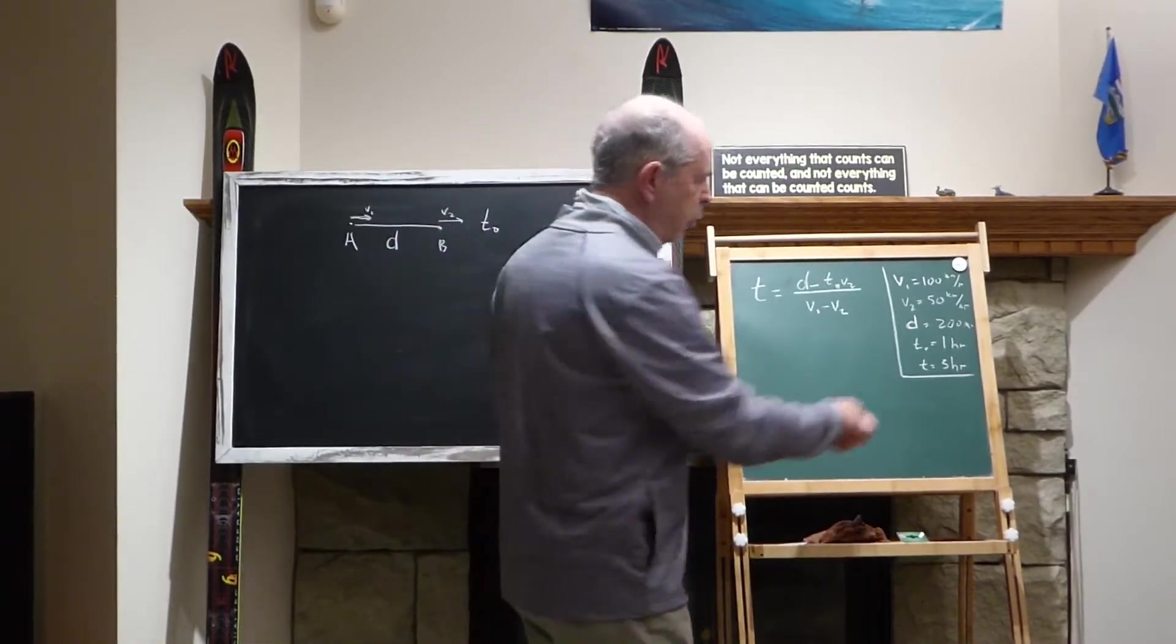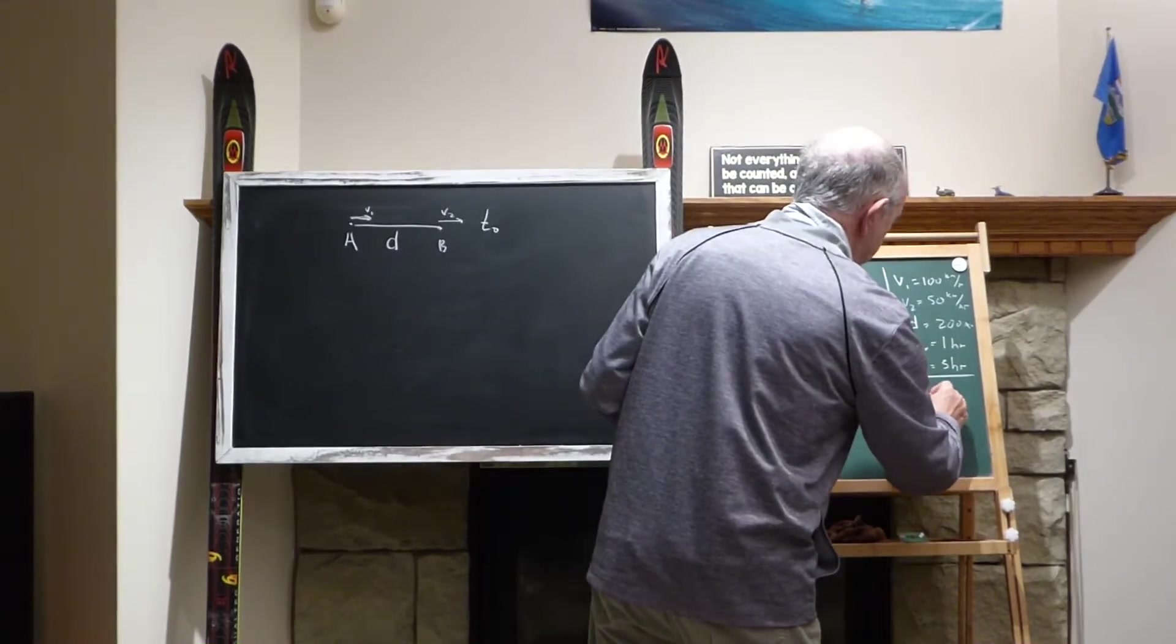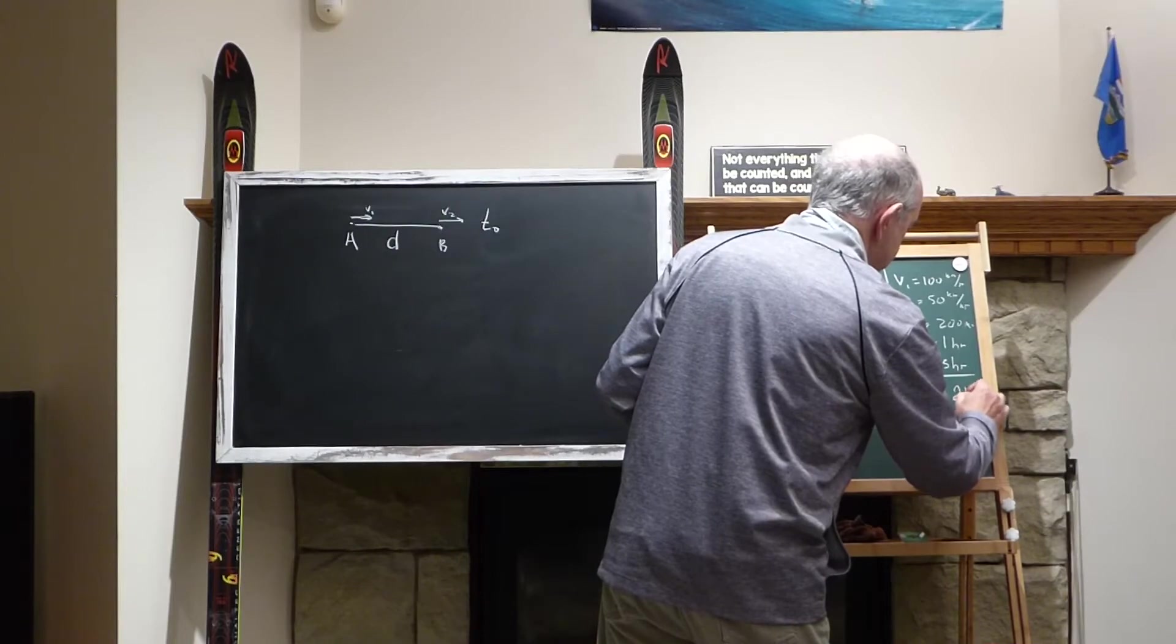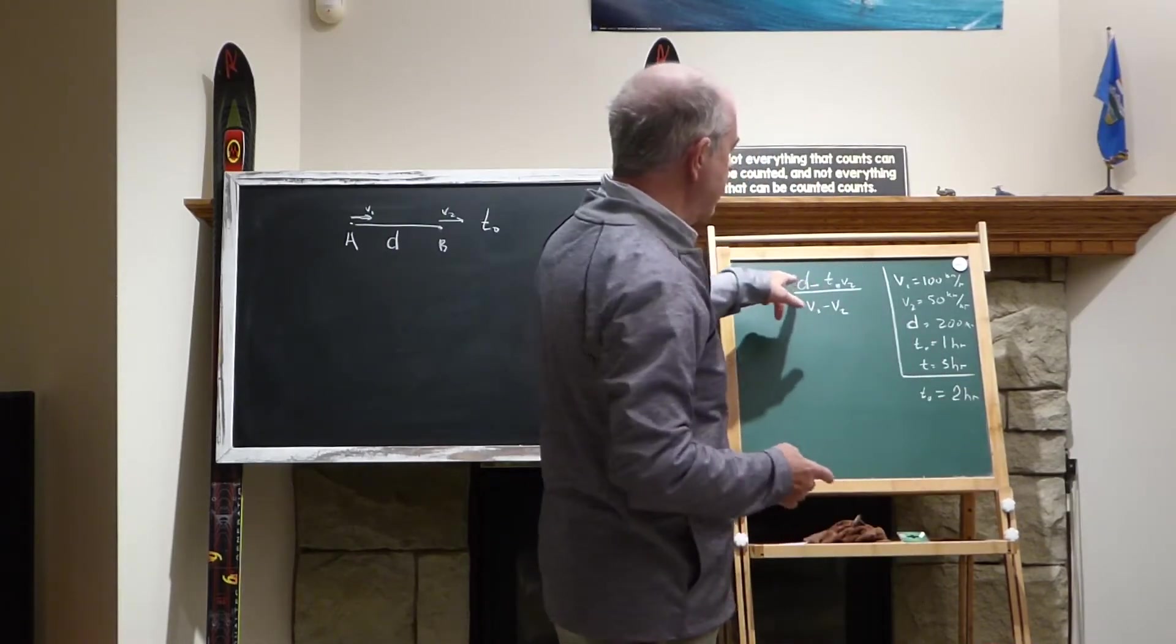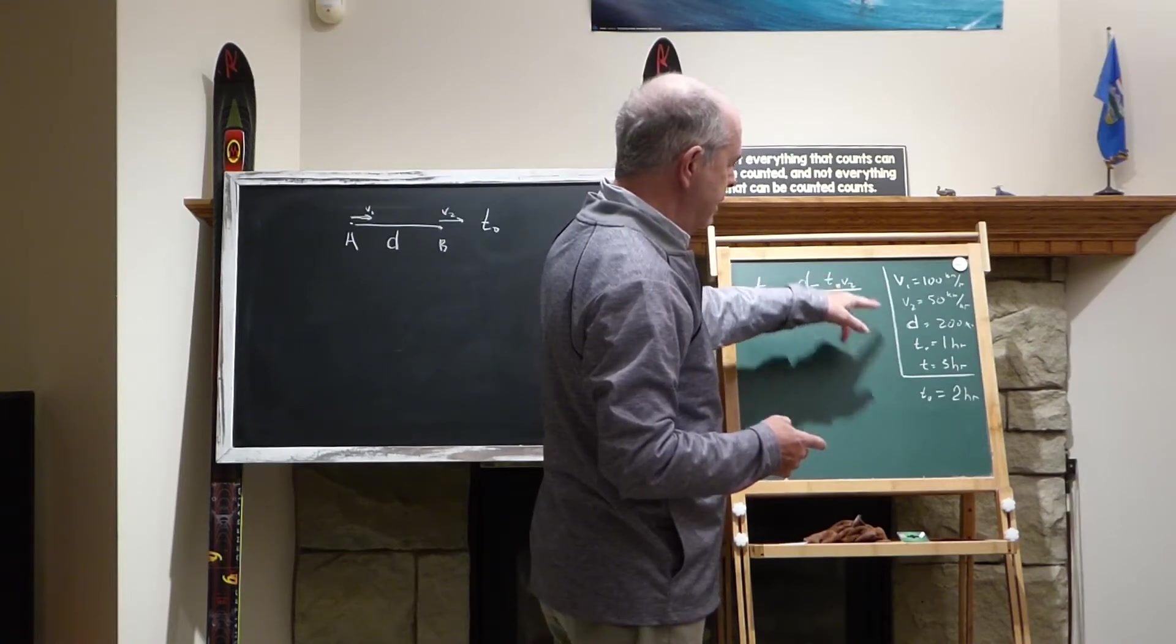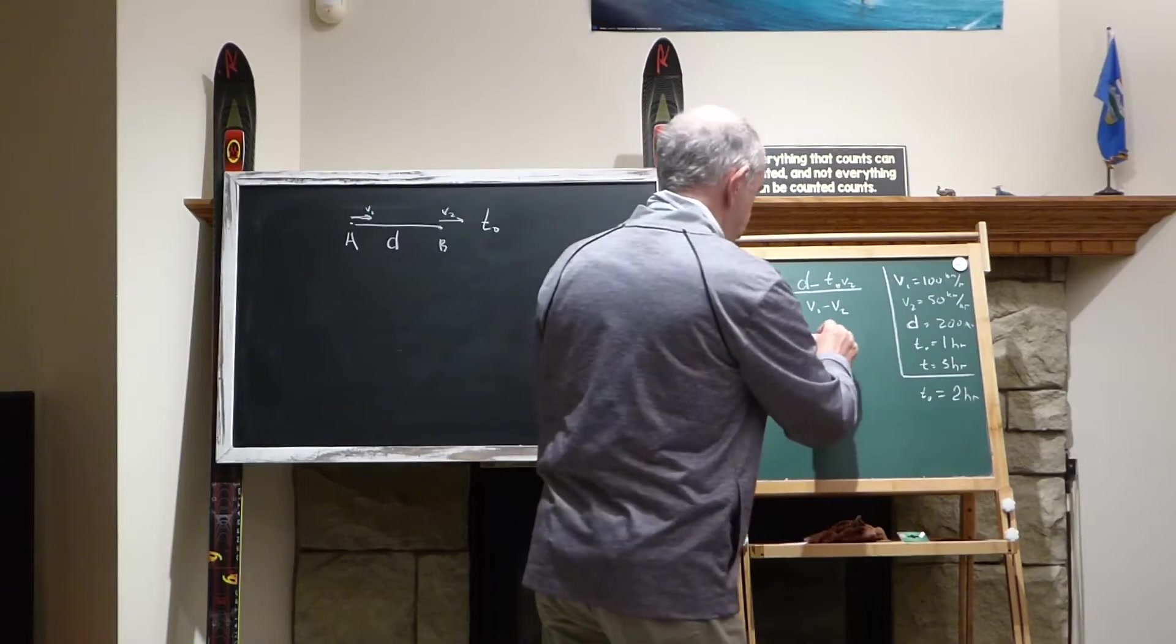But what if, for example, T0 would be not one hour, but two hours? If I plug the same numbers here, and T0 would be two hours, then 2 by 50 would be 100, and the top becomes 200 minus 100.